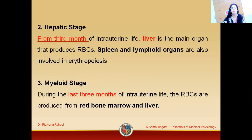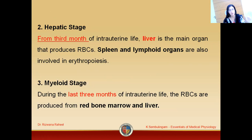When we talk about the hepatic stage, from the third month of intrauterine life, the liver is the main organ that produces RBCs. So in the hepatic stage there is formation of RBCs by the liver. No doubt, the spleen and lymphoid organs are also involved in erythropoiesis.